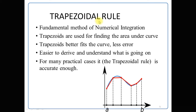The trapezoidal rule is the fundamental method of numerical integration. Trapezoids are used for finding the area under the curve. A trapezoid better fits the curve, giving less error. It is also easier to derive and understand. For many practical cases, the trapezoidal rule is accurate enough.